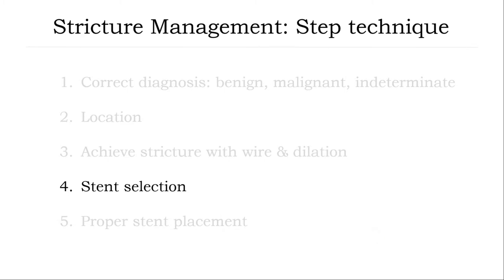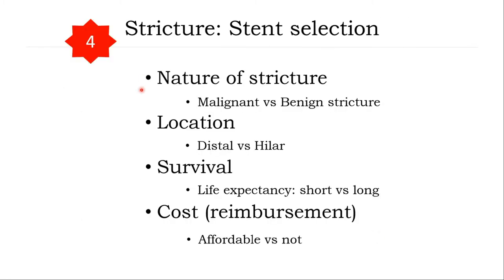Stent selection. Several parameters need to be considered. Number 1: nature of stricture — malignant, benign, or indeterminate. Number 2: location — distal or hilar. Number 3: survival, especially life expectancy — short or long, cut-off at three months. Number 4: cost or reimbursement — affordable or not.